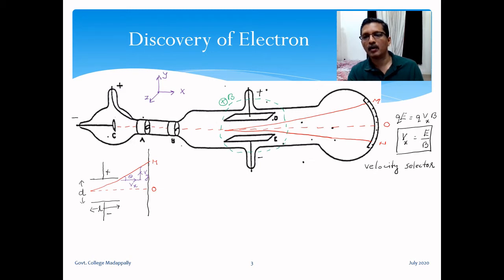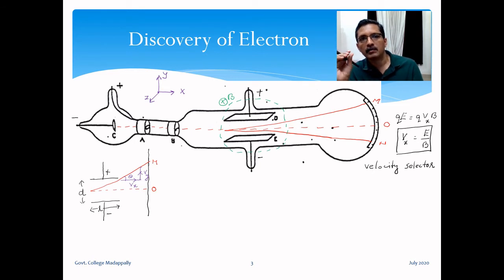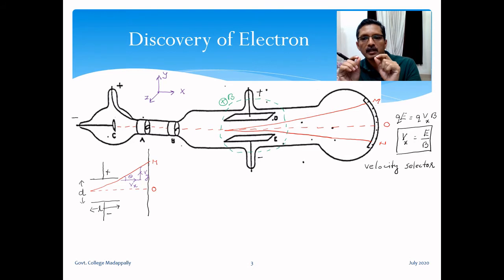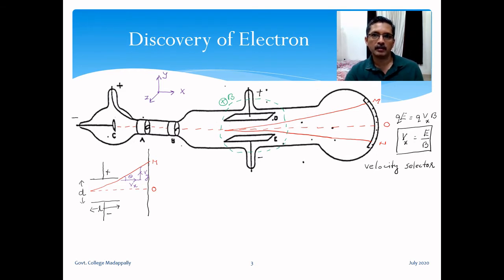When you apply crossed electric and magnetic fields and tune them to get an undeflected beam, the horizontal velocity component is always v_x = E/B. Effectively, from a beam of particles you are selecting those having a particular velocity or a narrow band of velocities around a specific value. After Thomson's successful measurement of e/m, this velocity selector technique has been widely used in mass spectrographs for different charged particles.